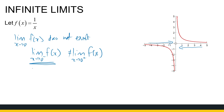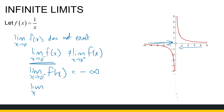If I look at the limit as x approaches zero from the negative side, I can see that my y-values get smaller and smaller, so that limit is minus infinity. And if I look at the limit as x approaches zero from the positive side, my y-values get bigger and bigger, so that goes to infinity. That is what we mean when we talk about infinite limits.